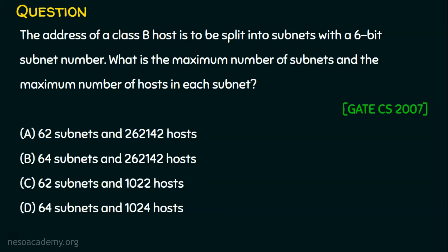Before we dive into the solution, we should understand what the default subnet mask was before subnetting was done. The default subnet mask was class B, and this class B is split into subnets with a 6-bit subnet number. Please make a note of this — it is a 6-bit subnet number.